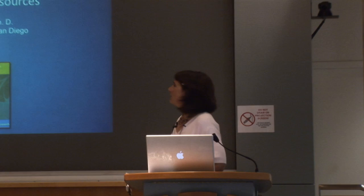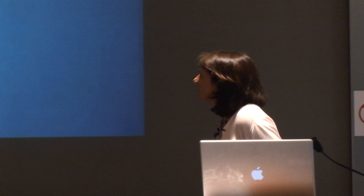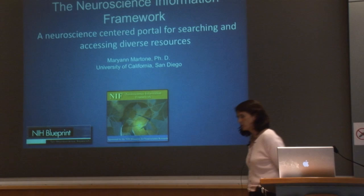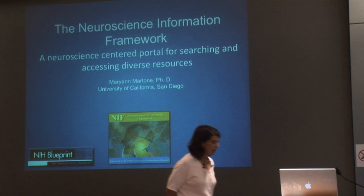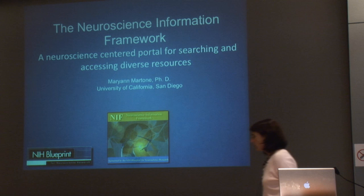We're talking today about the Neuroscience Information Framework, or NIF as we call it. Essentially, NIF is a neuroscience-centered portal for searching and accessing diverse resources available through the web. As Peter indicated, this NIF project is really an outgrowth of a recognized need in biomedical science: now that you can get ready access to all the information in the world, what do you do with it, how do you actually find the things that you're looking for? It's an increasing problem, and there are more and more projects like NIF being launched.